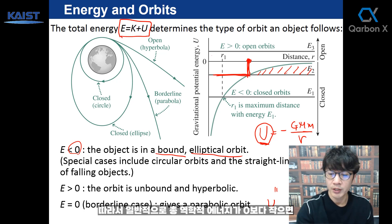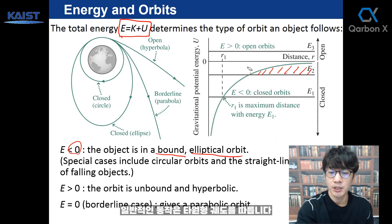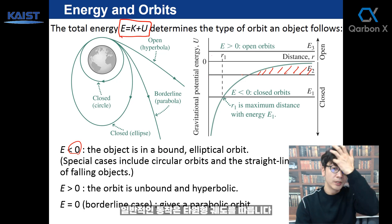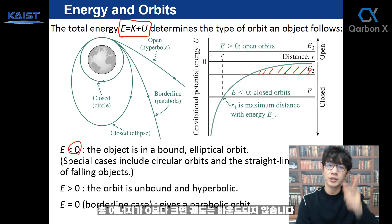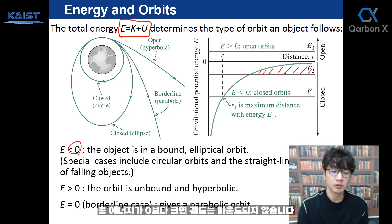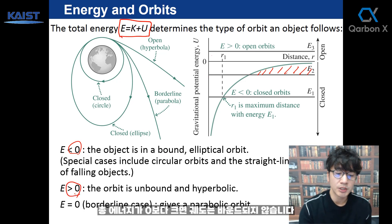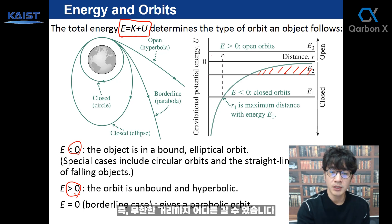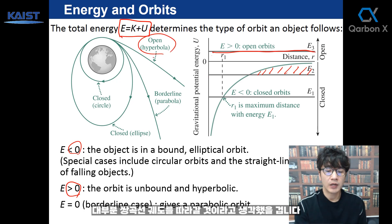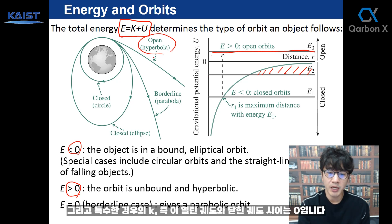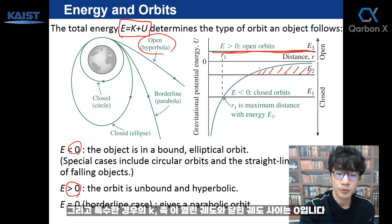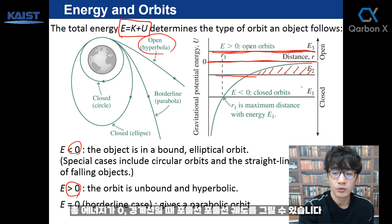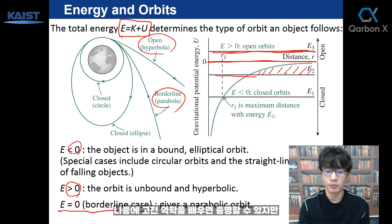In general, when the total mechanical energy is less than zero, the motion follows an elliptical orbit. When total energy is greater than zero, the orbit is unbound — the object can travel to infinite distance and follows a hyperbolic path. For the special borderline case between open and closed orbit, when total energy is exactly zero, the object follows a parabolic orbit. We can prove this later in classical mechanics.